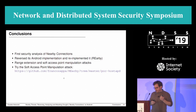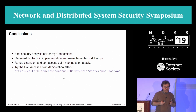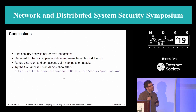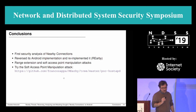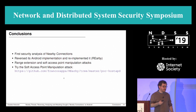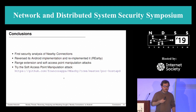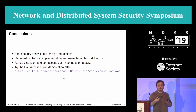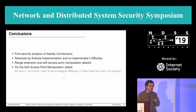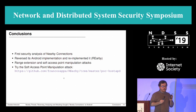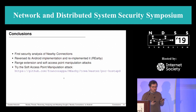In conclusion, this work presents the first security analysis of Nearby Connections — a public API developed by Google to enable proximity-based services on Android and Android Things. We reverse-engineered its Android implementation and re-implemented it in a toolkit called Rearby, which runs on a commodity laptop. Through Rearby we are able to perform several attacks; range extension and soft access point manipulation are just two examples. More attacks are described in the paper, and you can download materials to reproduce the soft access point manipulation attack on your own phone at the link in the slide. Thank you.